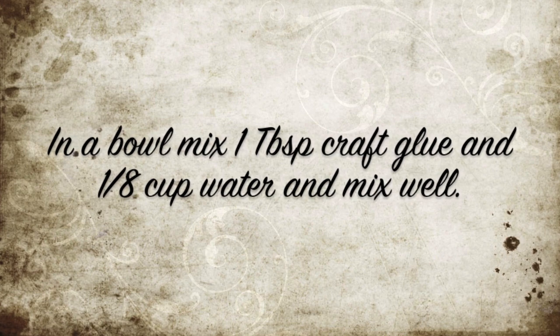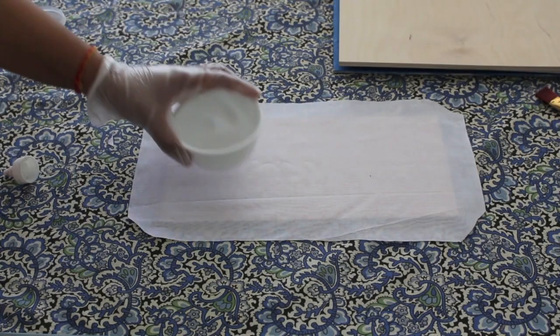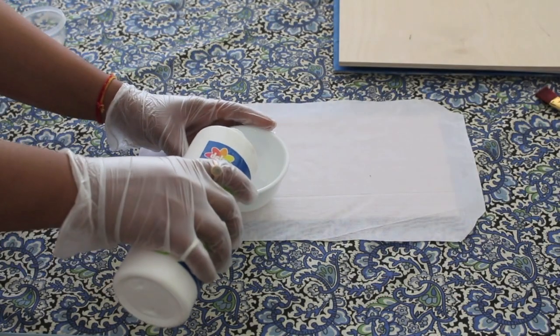Now cut the cloth a little bigger, one inch on each side, and cut the corners off and place it on top of the board.